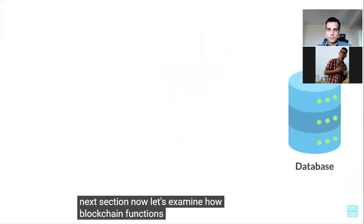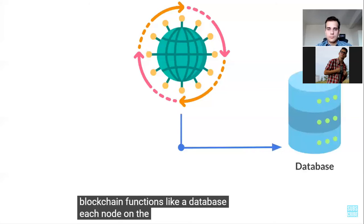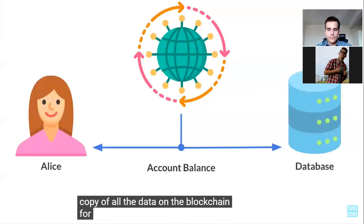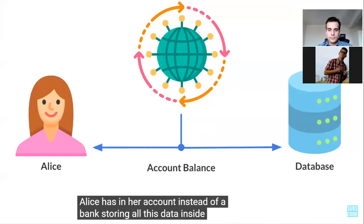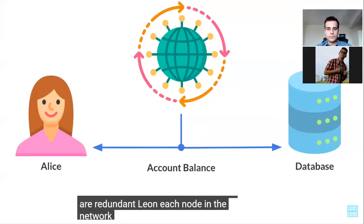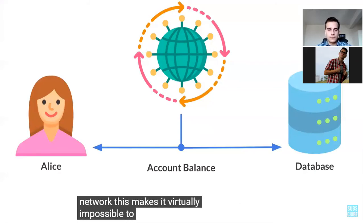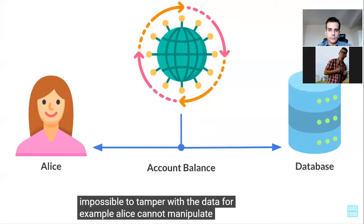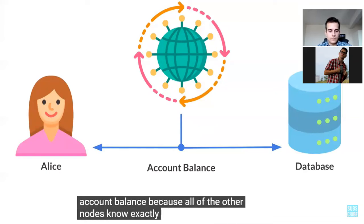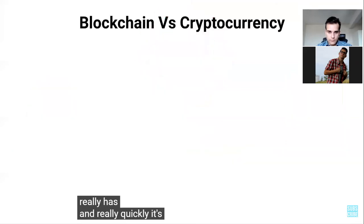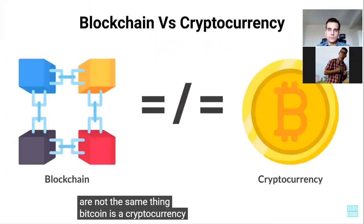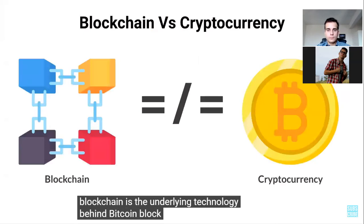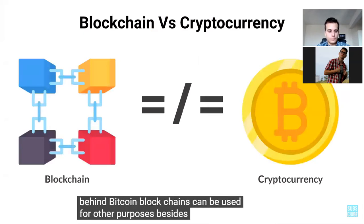A blockchain is a peer-to-peer network, meaning it's a system of nodes or computers that all talk to one another. Each node on the network maintains a copy of all the data on the blockchain. Instead of a bank storing all this data inside a central database, the blockchain stores it redundantly on each node in the network. This makes it virtually impossible to tamper with the data — Alice cannot manipulate her account balance because all of the other nodes know exactly how much money she really has.